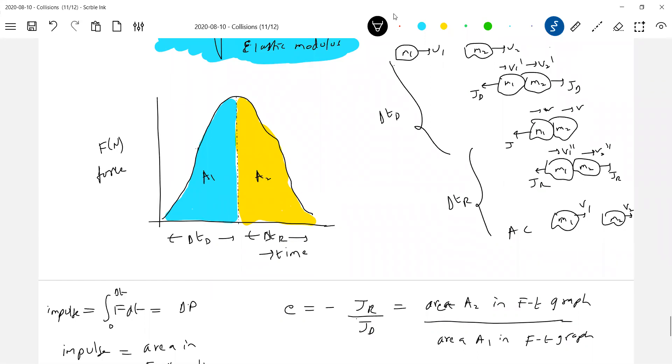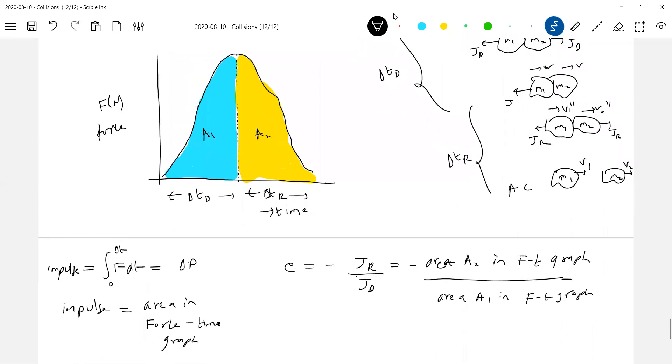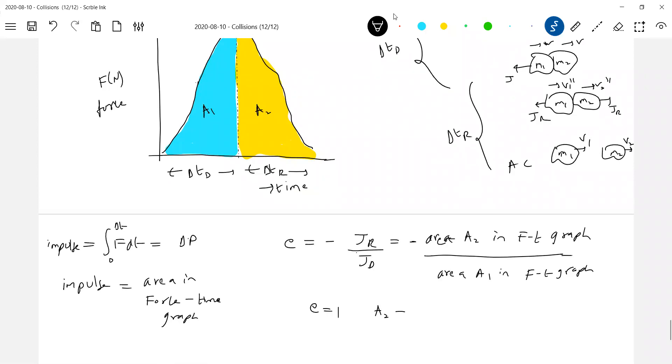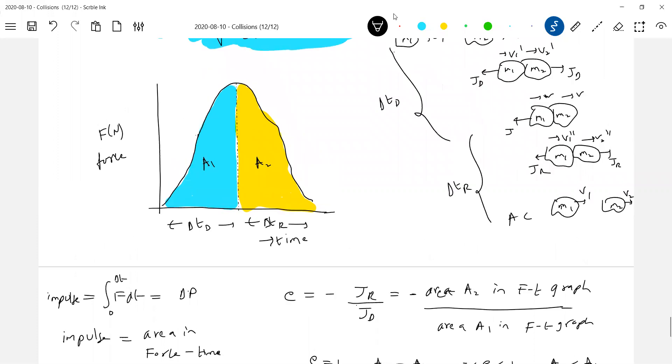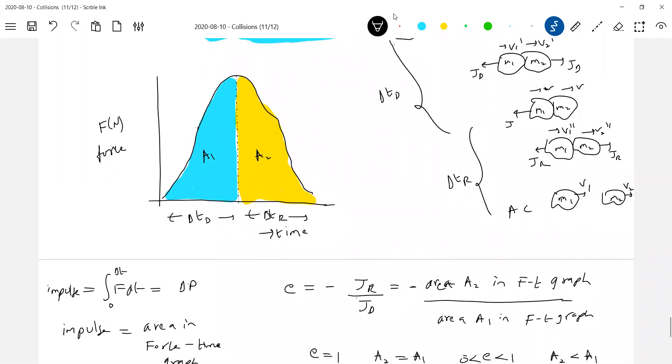The negative sign will get eliminated when you calculate. Don't bother that negative sign. For elastic collision, E equal to 1, A2 will be equal to A1. For inelastic collision, A2 should be less than A1. For perfectly inelastic collision, A2 should be 0. Zero means afterwards the force should be 0, and then move at common velocity.